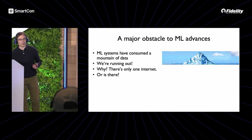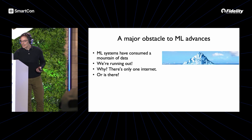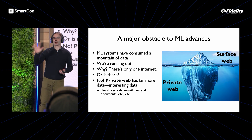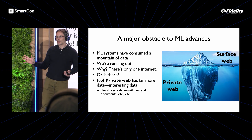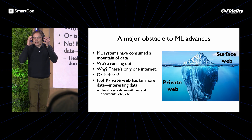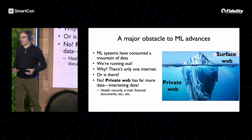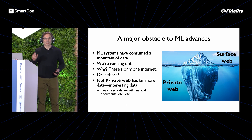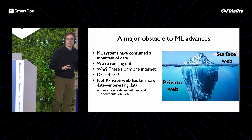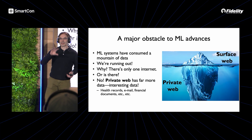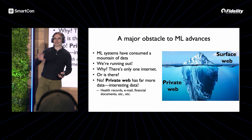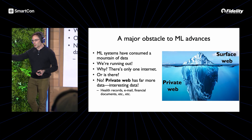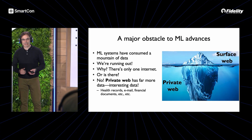But is this actually true? In some sense there are two internets. There's the surface web — the publicly scrapable portion of the internet — and then there's the private web, the walled-off portion of the internet.